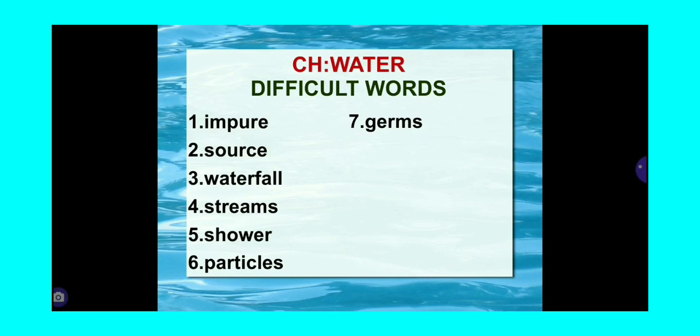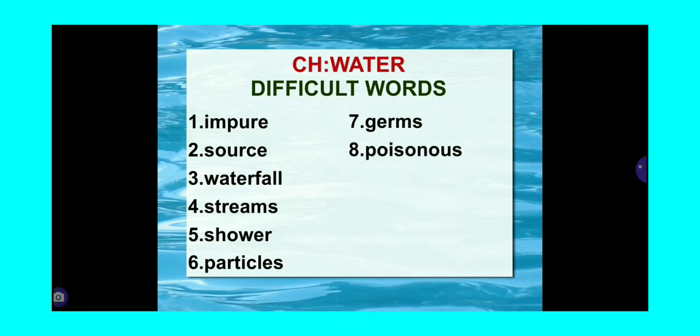Seventh is germs. G-E-R-M-S. Germs means kitaanu. Eighth, poisonous. P-O-I-S-O-N-O-U-S. Poisonous means zahreela, जिसमें poison हो. Ninth is various. V-A-R-I-O-U-S. Various means different.